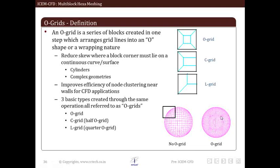Another important use of O-Grid is it improves efficiency of node clustering near wall. That is very fine mesh can be generated near wall to capture the physics. The advanced topology of O-Grid are C-Grid and L-Grid. C-Grid is called half O-Grid and L-Grid is called quarter O-Grid. These are obtained by manipulating O-Grid. C-Grid consists of 4 sub block topology in 2D and 6 sub blocks in 3D. L-Grid consists of 3 sub block topology in 2D and 5 sub block in 3D.